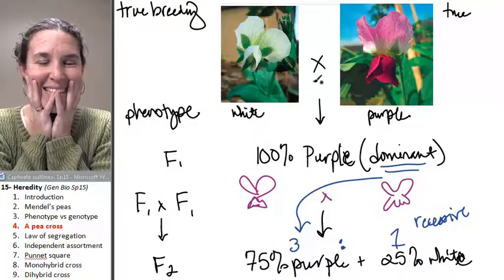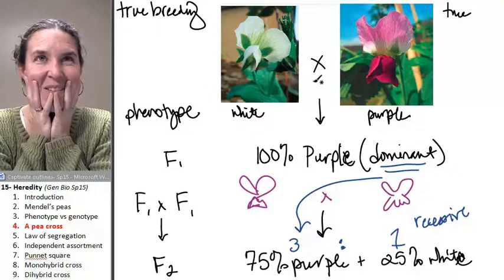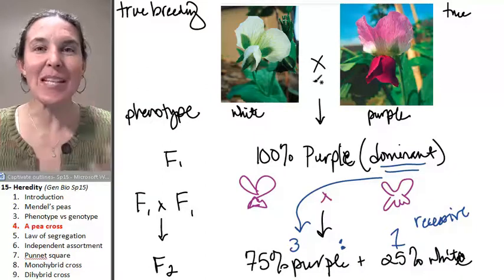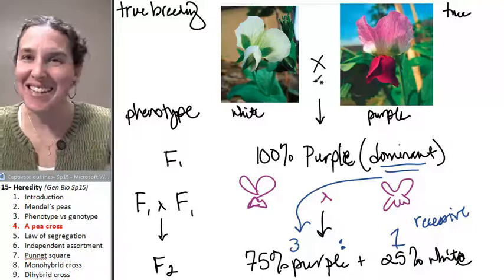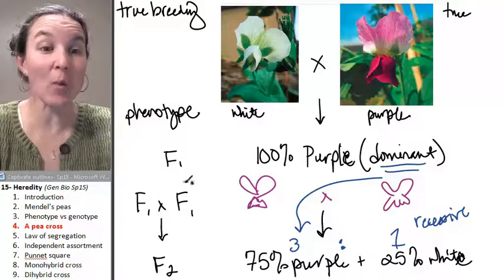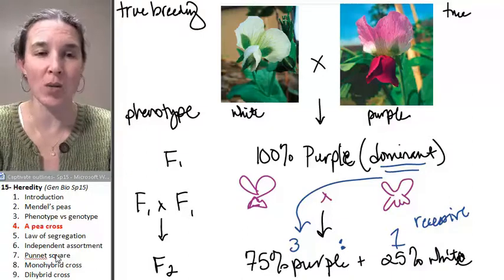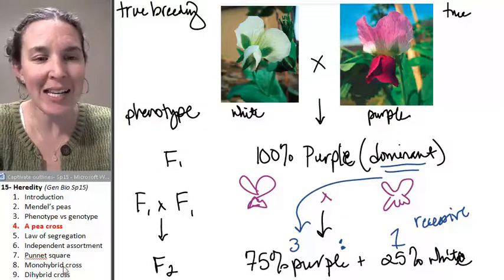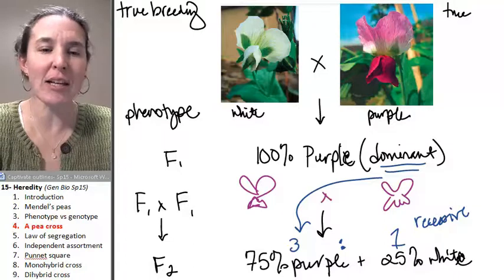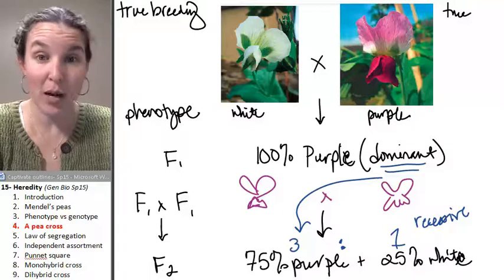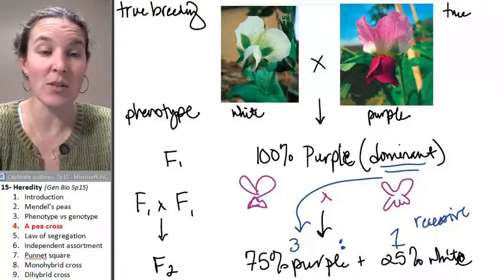But I think it's important to realize that he was able to draw conclusions without knowing anything else. He doesn't know anything that we know. When we look at our Punnett square, we're going to make a Punnett square and we're going to use our genetic knowledge. But he didn't have it yet. So let's look at the conclusions that he drew just based on looking at these results.